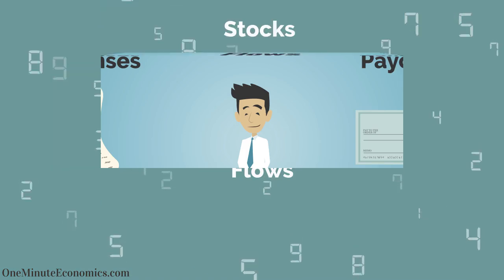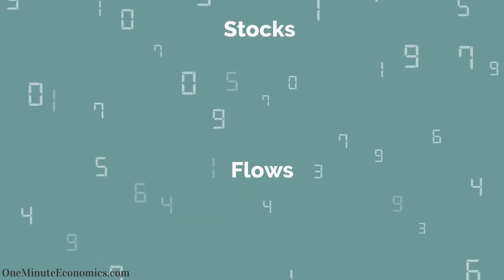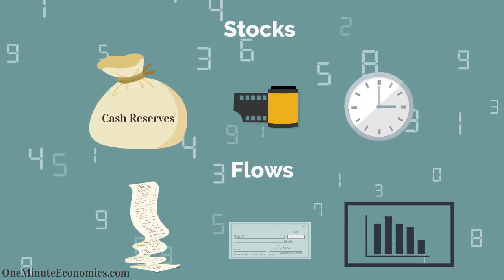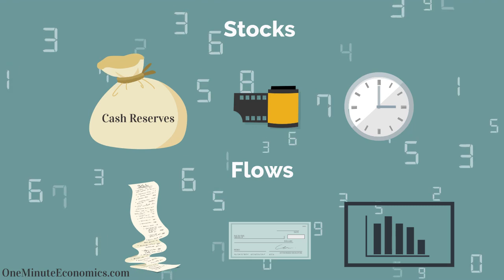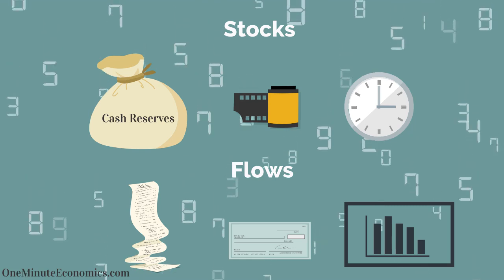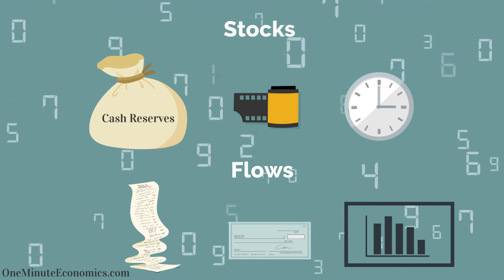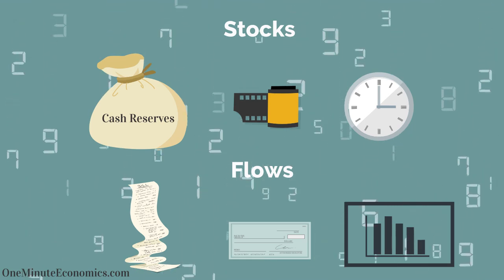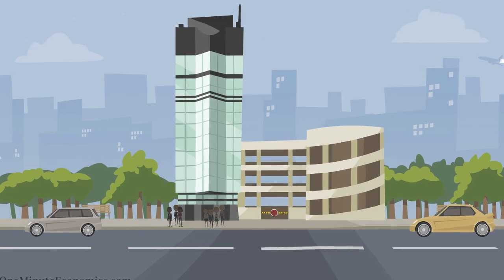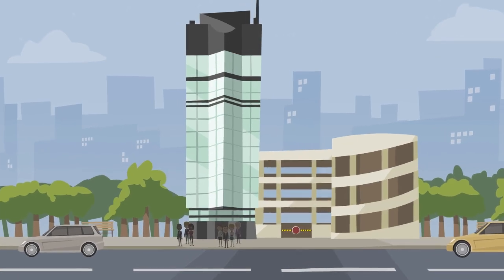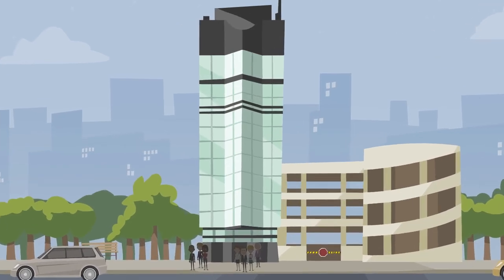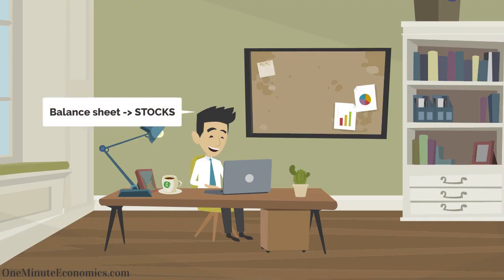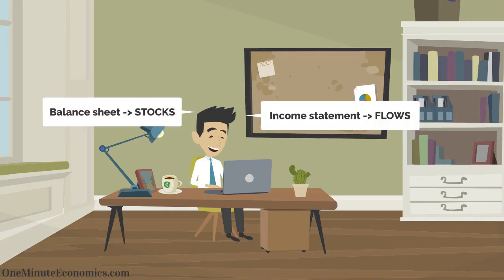In other words, you can think of stocks as snapshots that you take at a certain point in time, and flows as actions which make stocks go up or down. When analyzing a company, for example, we'll want to look at a balance sheet to find stocks or an income statement to find flows. It really is that simple.